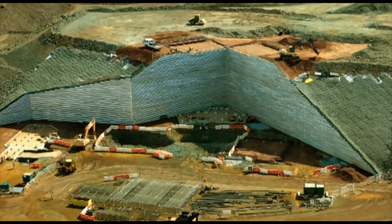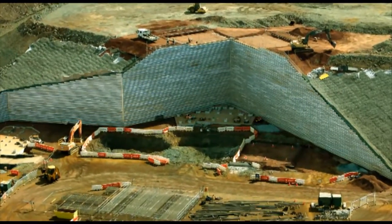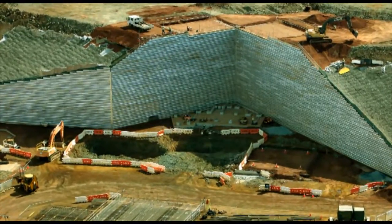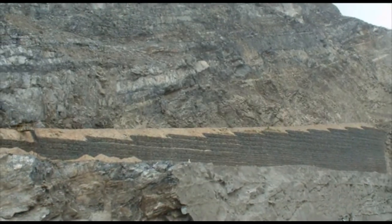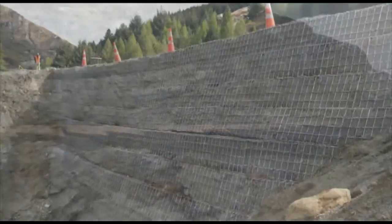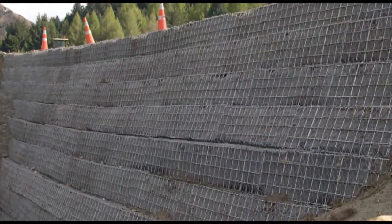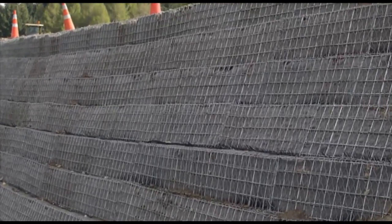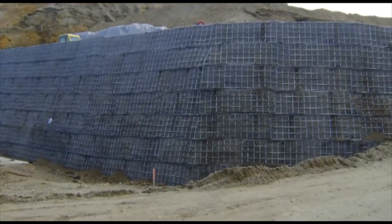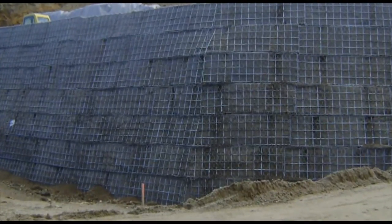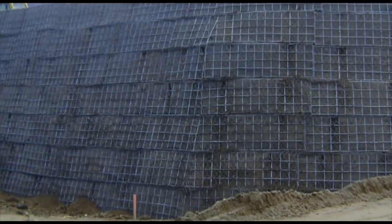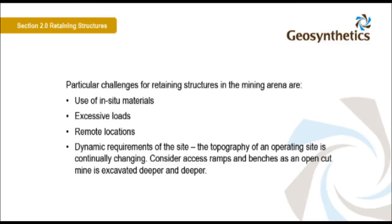The engineer may use retaining structures anywhere within the mine. This large retaining structure is a dump wall, and this one is used to support a haul road. Often, engineered structures may be built simply to allow the mine to function in difficult terrain. Particular challenges for retaining structures in the mining arena are: use of in situ materials, excessive loads, remote locations, and the dynamic requirements of the site, as the topography of an operating mine is continually changing.